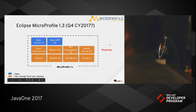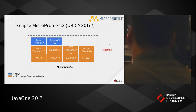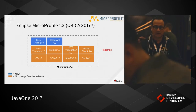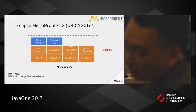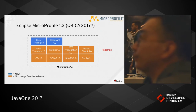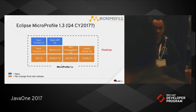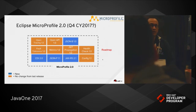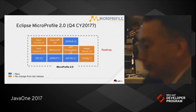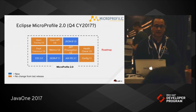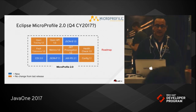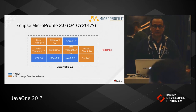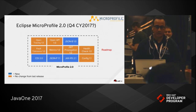Speaking of the future and roadmap, MicroProfile 1.3 is scheduled to come out later this year, and the plan is to include functionality related to OpenTracing and OpenAPI. MicroProfile 2.0, also scheduled later this year, will have updates to CDI, JSON-P, and JAX-RS, and will possibly contain JSON-B 1.0, which will be part of Java EE 8.